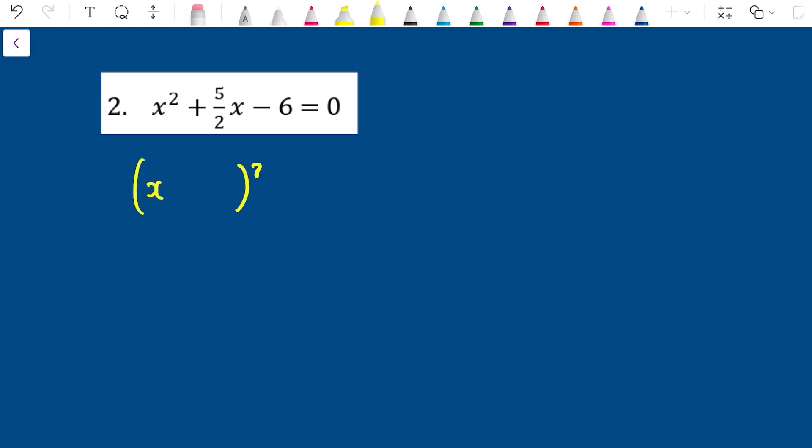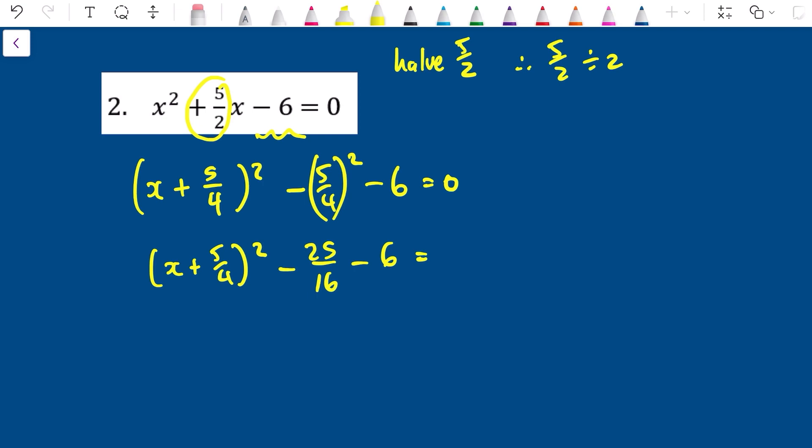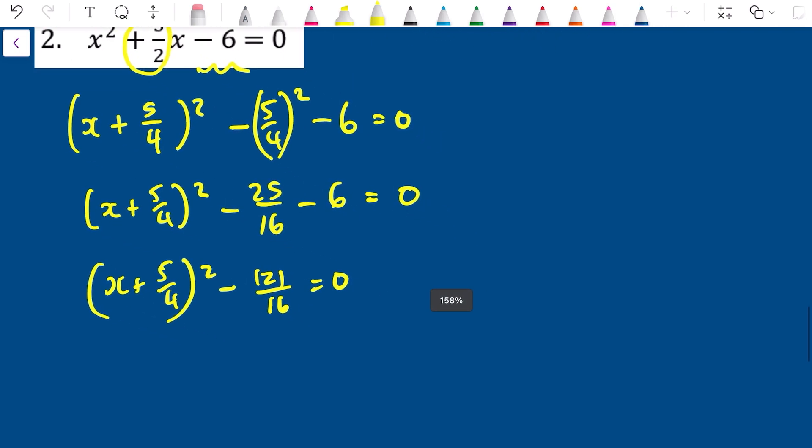I've got my brackets squared. I take positive 5/2. I halve 5/2. Therefore 5/2 divided by 2 is going to give me 5/4. Immediately I subtract (5/4)² and I carry down the -6 and the = 0. I tidy things up. So -(5/4)² is -25/16. This is going to become -25/16 - 6 which will give me -121/16. And now I need to solve. I've completed the square.